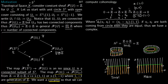Now we can compute cohomology. The kernel of the map from F(S¹) to F(U1) × F(U2): everything maps to 0 (by the global section argument), so the kernel is ℤ. Modulo the image of d⁰: the image is {s1 − s2} ranging over all integers, which is itself ℤ. So the cohomology is ℤ modulo ℤ.